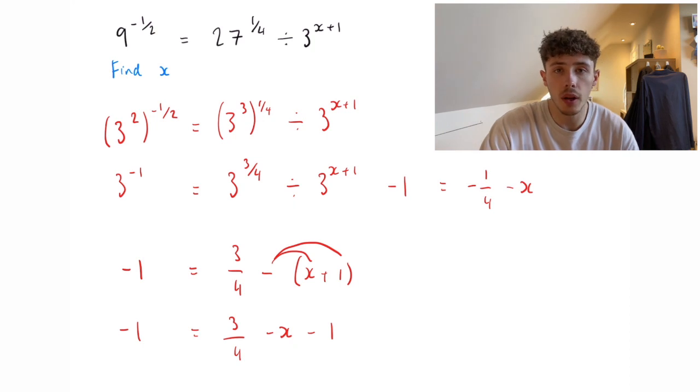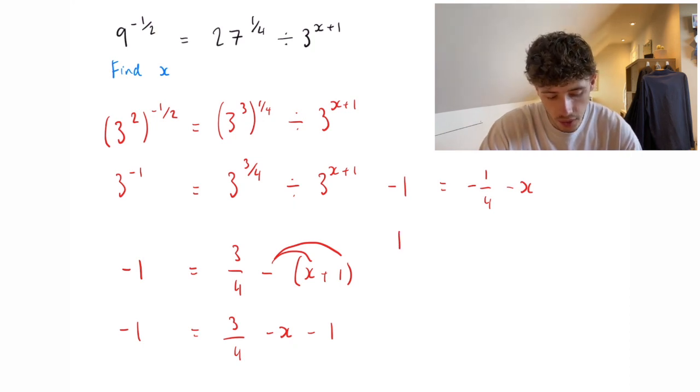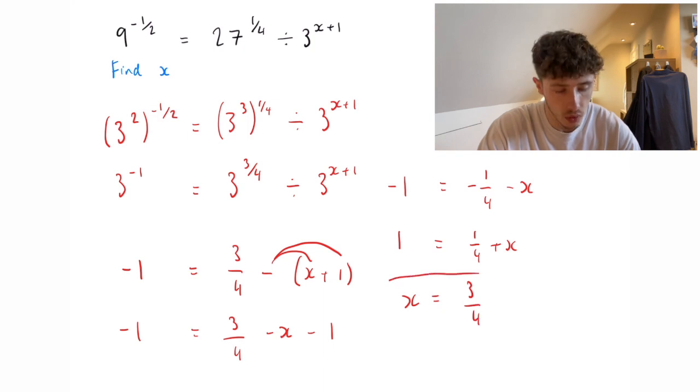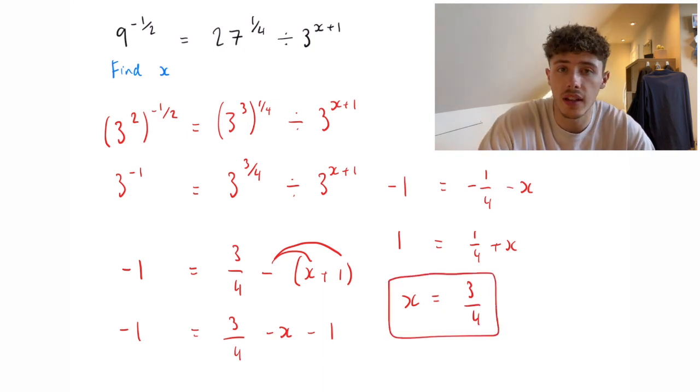So we can multiply all of that by minus 1 which will leave us with 1 equals a quarter plus x. Then if we take away the quarter onto the other side, you can see that x equals 3 quarters or 0.75 if you prefer it as a decimal. That is our final answer.